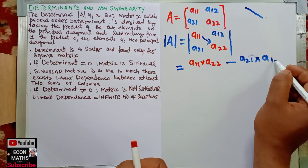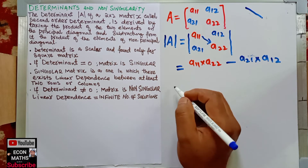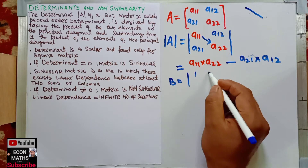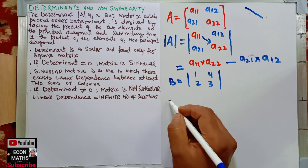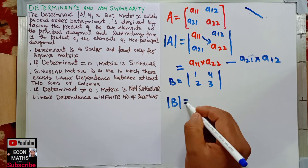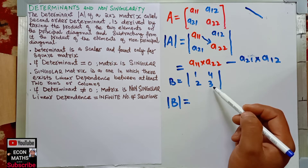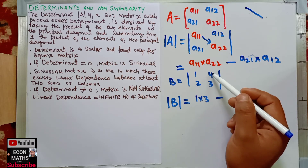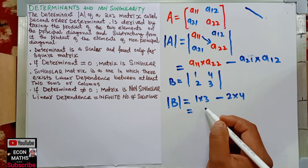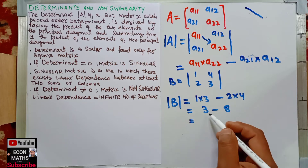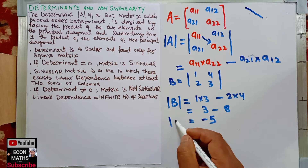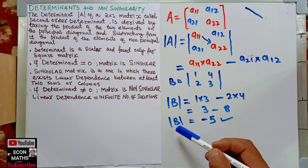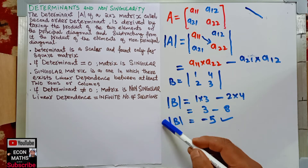For example, if we have a matrix B equal to [[1, 4], [2, 3]], the determinant of B is 1 times 3 minus 2 times 4, which gives 3 minus 8, equal to minus 5. So the determinant here is minus 5.